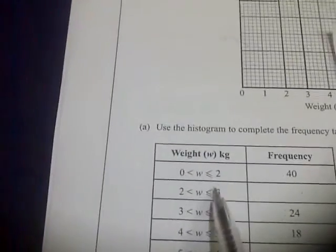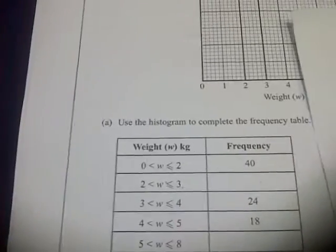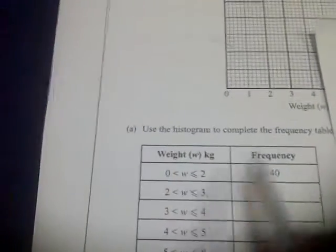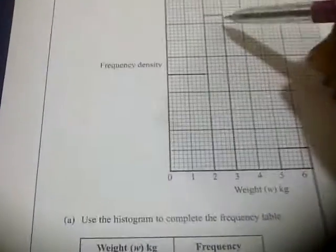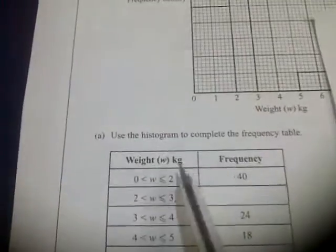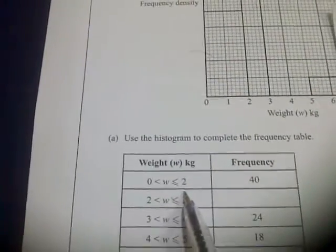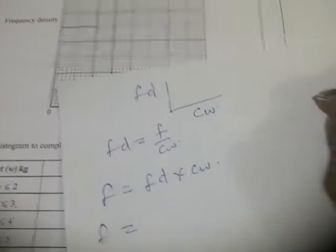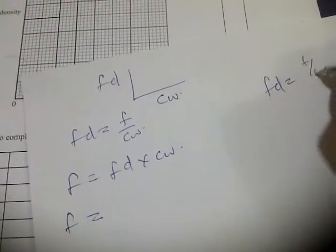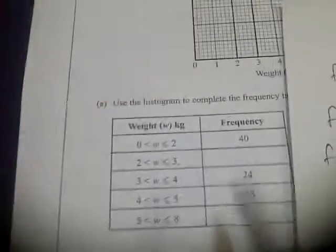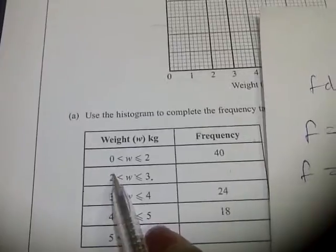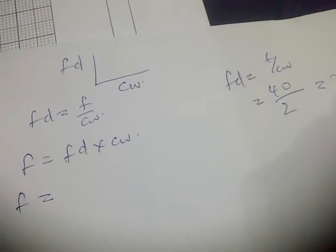Now for the first one, 2 to 3, the frequency will be FD times CW. The FD here, we don't know it. First of all, for us to find out the unit for calibration, let's do the first one. The frequency density for the first one, F over CW equals the frequency for the first one is 40, 40 over the CW is 2 minus 0, that's 2, and that's 20.